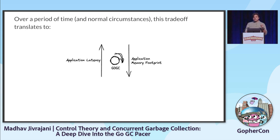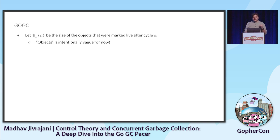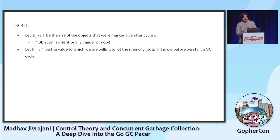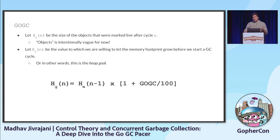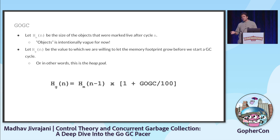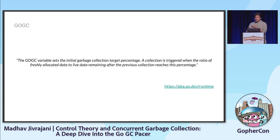To understand GOGC: if HM is the size of objects marked live at the end of a GC cycle, and HG is the memory footprint we're willing to let grow before starting the next cycle, then HG is calculated as a multiple of the live heap size. The default GOGC value is 100, giving HG = 2 × HM — we let the heap grow to twice the live heap before starting the next GC cycle.